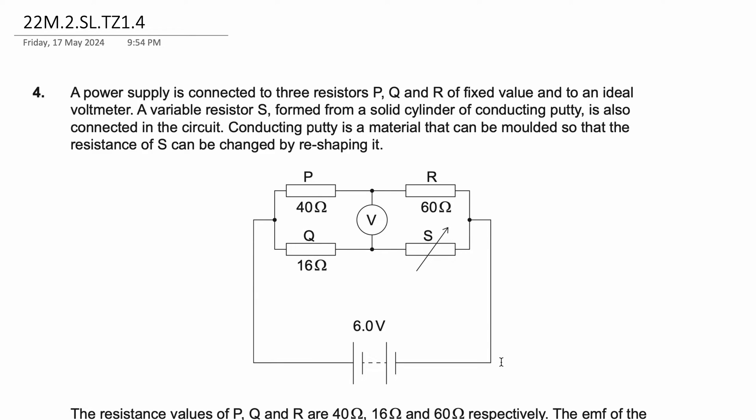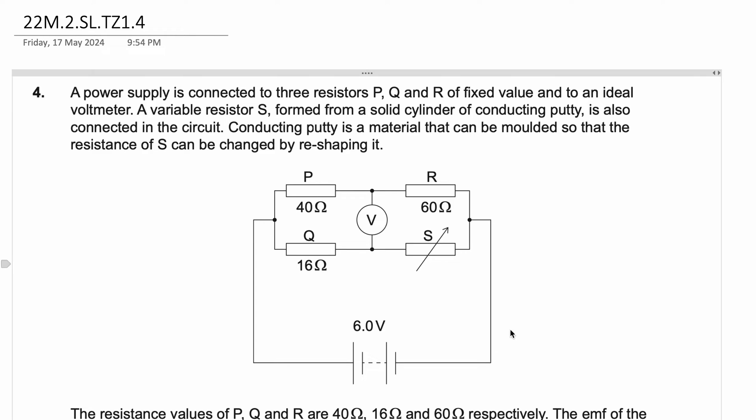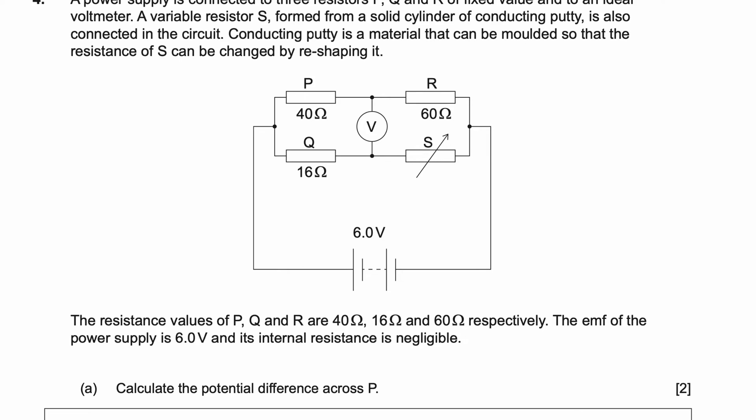This is an electric circuits question, topic B. A power supply is connected to three resistors P, Q and R of fixed value and to an ideal voltmeter. A variable resistor S formed from a solid cylinder of conducting putty is also connected in the circuit. Conducting putty is a material that can be molded so that the resistance of S can be changed by reshaping it. The resistance values of P, Q and R are 40, 16 and 60 ohms respectively. The EMF, electromotive force, of the power supply is 6 volts and its internal resistance is negligible.